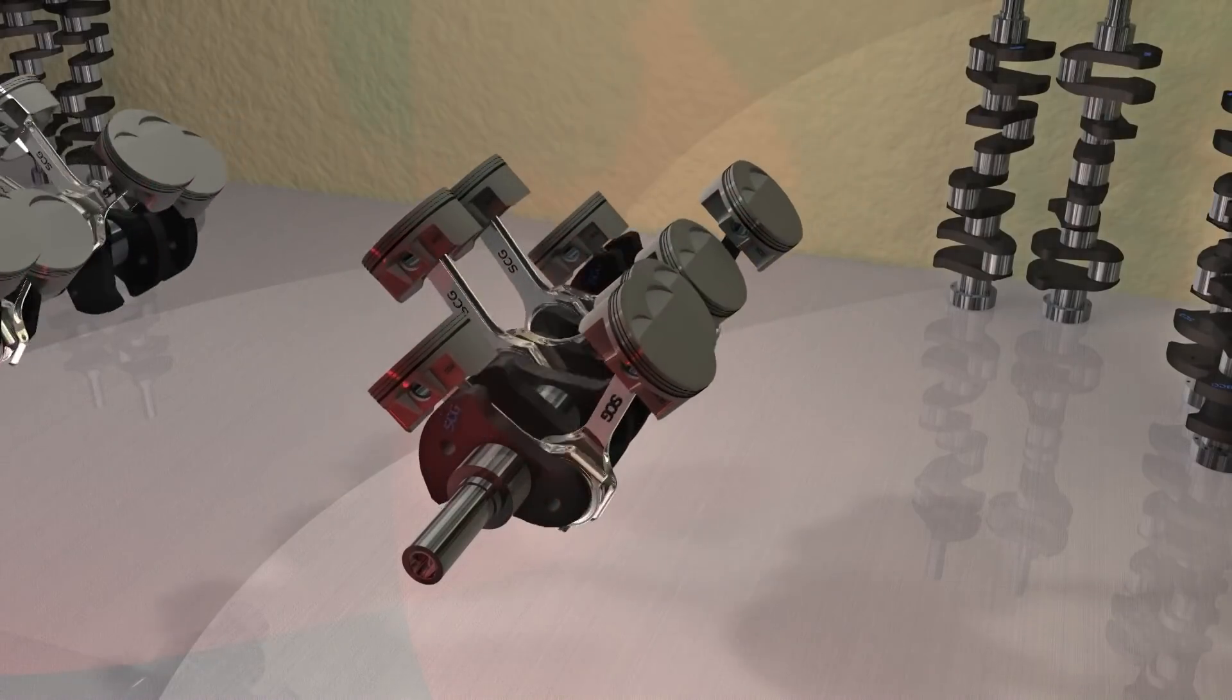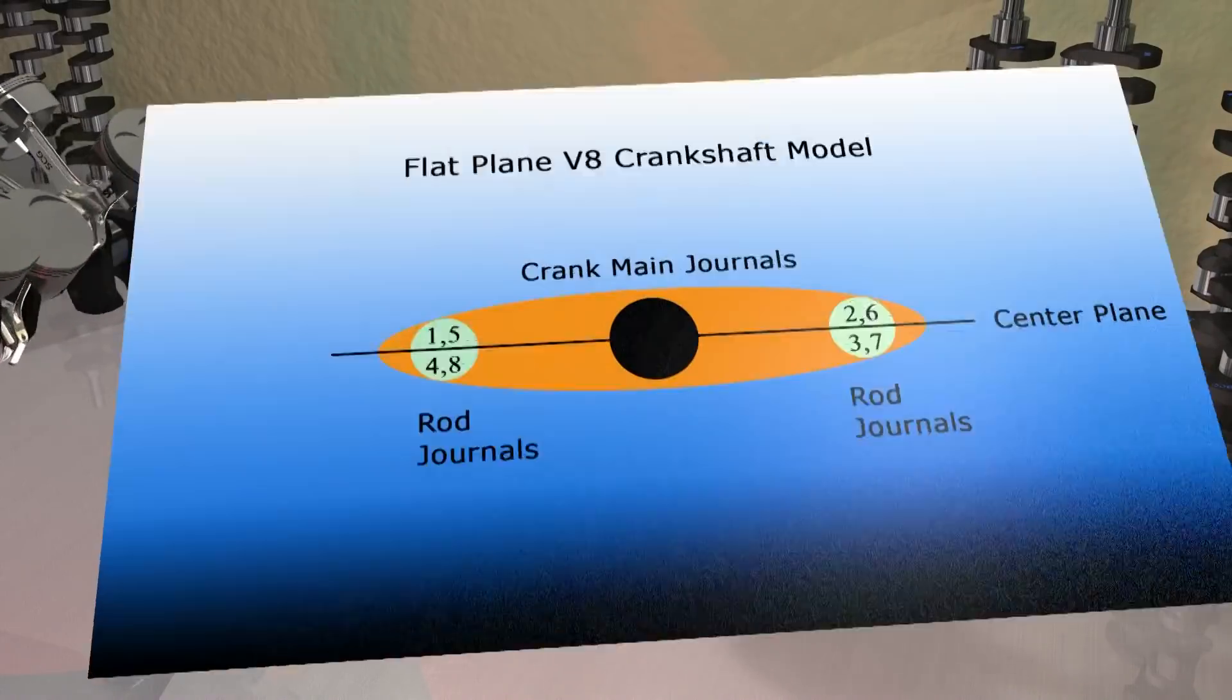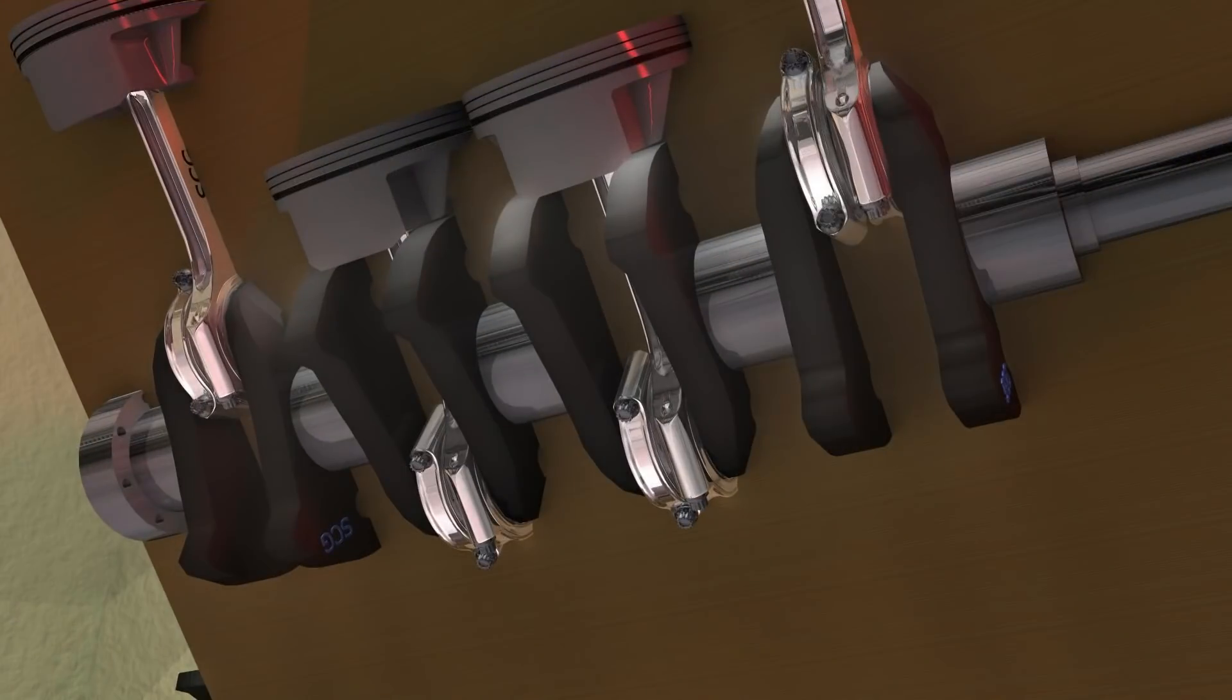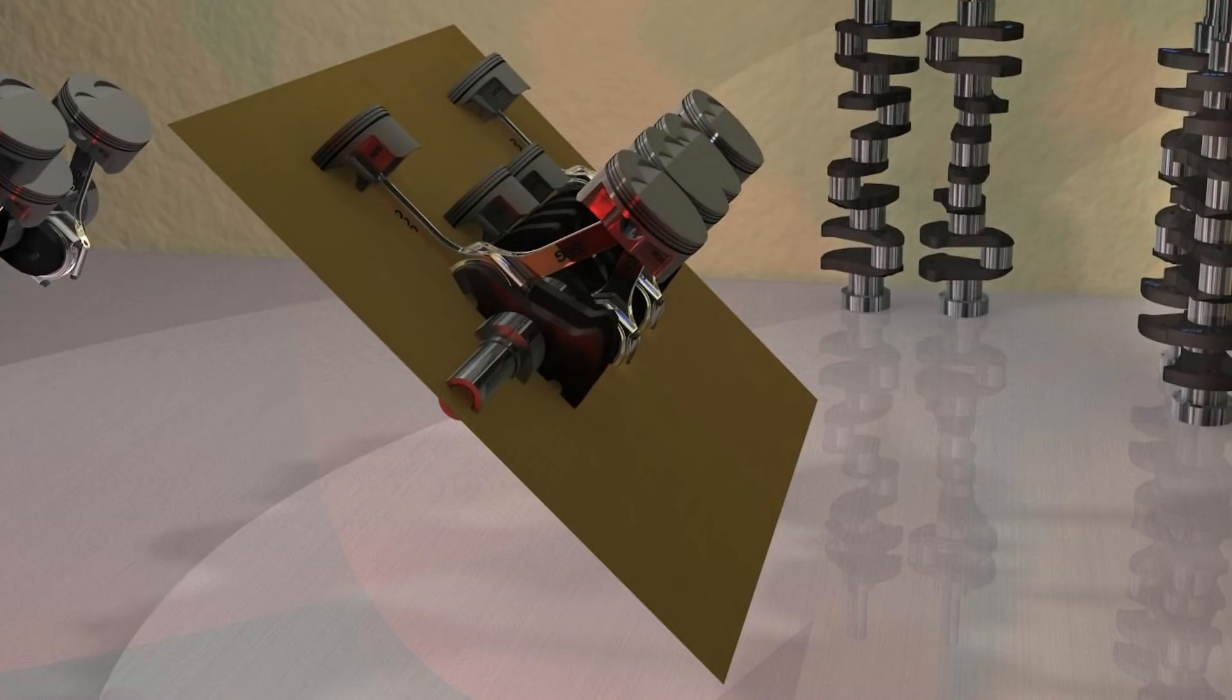And the flat plane? The straight on rendering shows the rod journals are all in the same plane. Putting in the thin piece of cardboard to illustrate the plane, one can clearly see the rod journals. Hence the proper name: flat plane crankshaft.